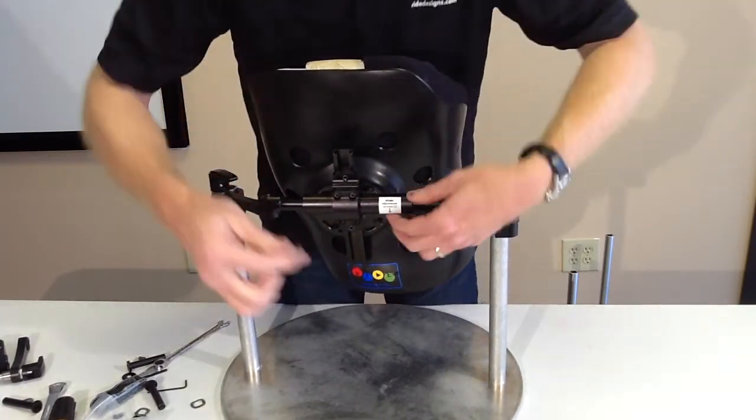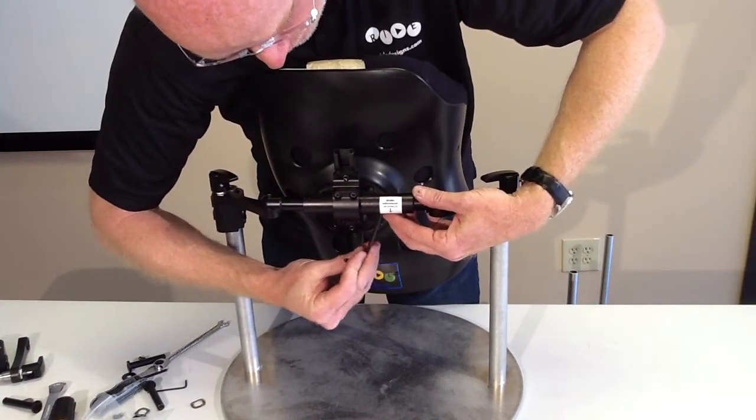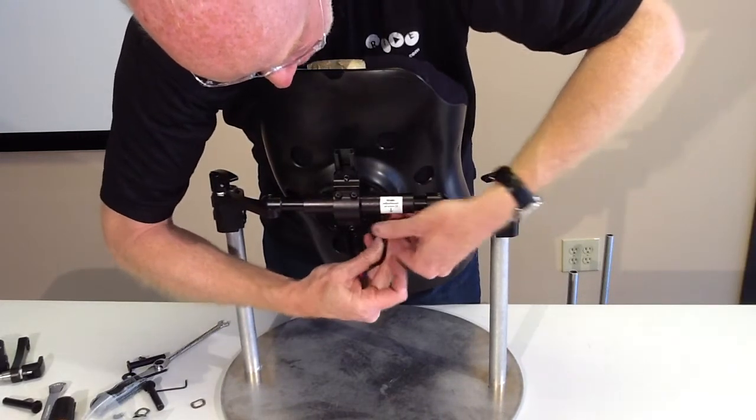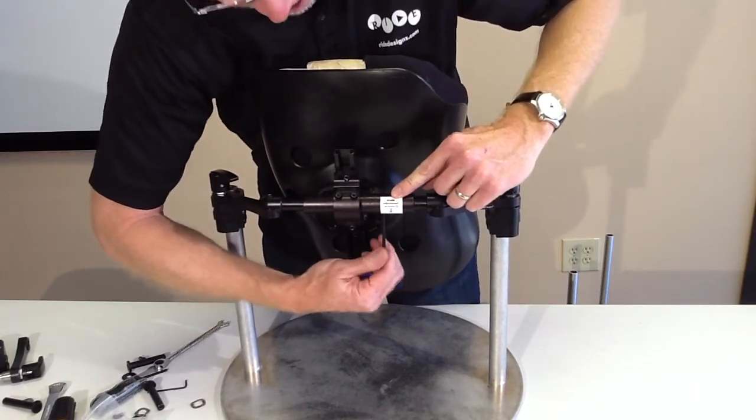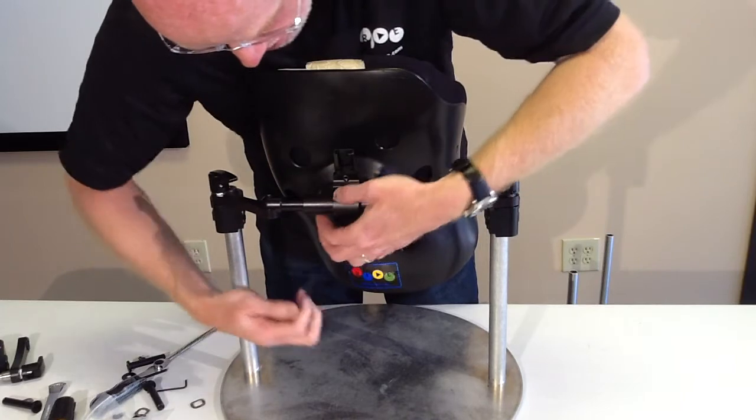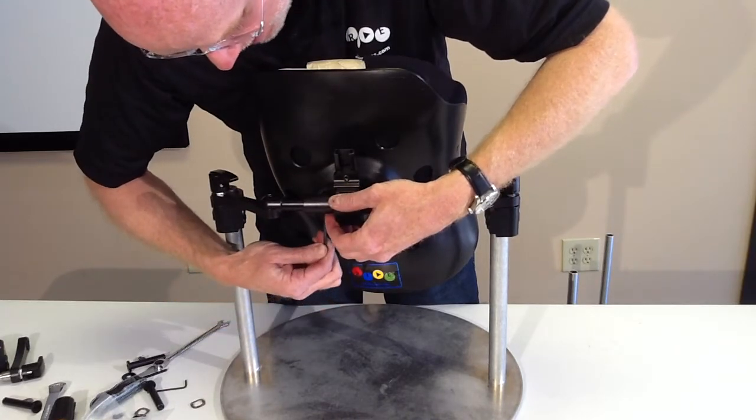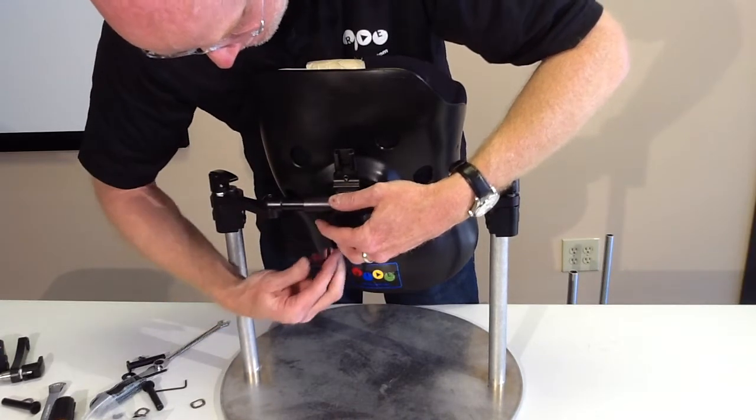Now I will go to my width adjustment screws, which you access from below. These are easy to forget. That's why we put this sticker here. Width adjustment screws, set screws. Those need to be tightened down, otherwise the back will move laterally.